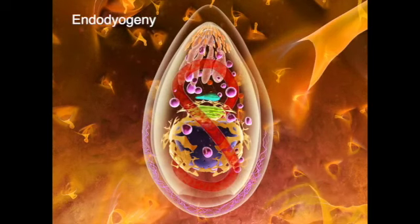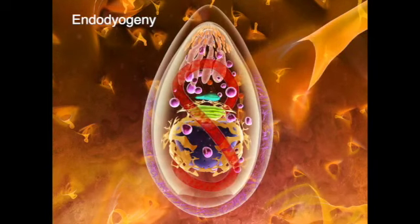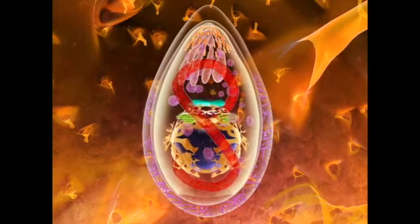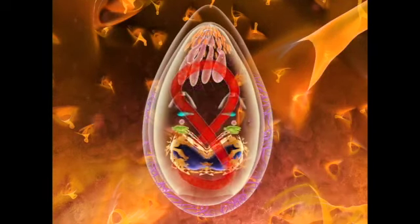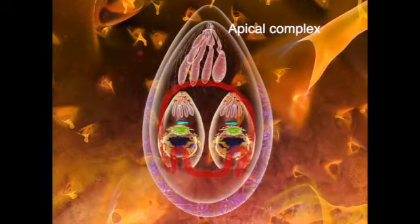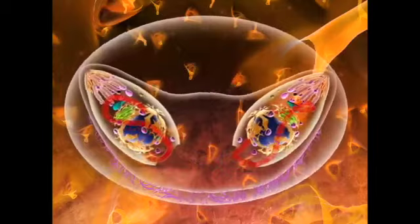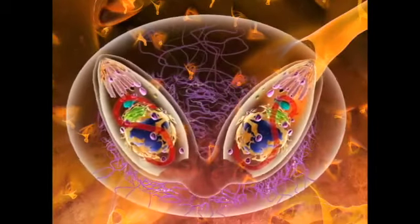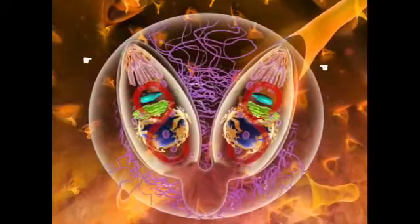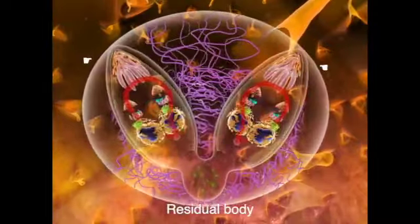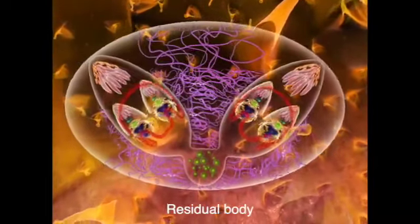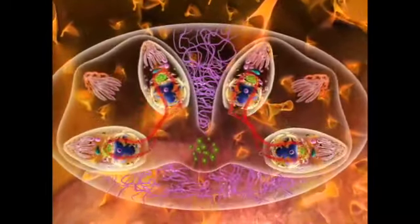During endodiogeny, two daughter cells are formed inside the mother cell. The mother cell keeps the apical complex until late in the process, while the nucleus and other organelles duplicate and are distributed between the future daughter cells. Two new apical complexes and the inner pellicle form. The two daughter cells emerge, but remain linked to a residual body.